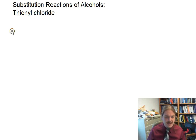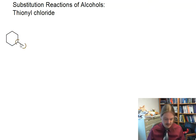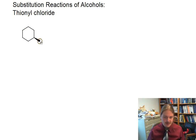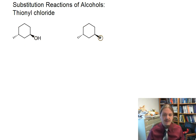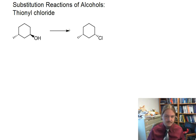What if we are really interested in a particular substitution reaction of an alcohol? Let's say we have an alcohol here with a chirality center, and we're interested in converting this alcohol into its corresponding chloride and doing it in an SN2 kind of fashion, so we're swapping the stereochemistry.